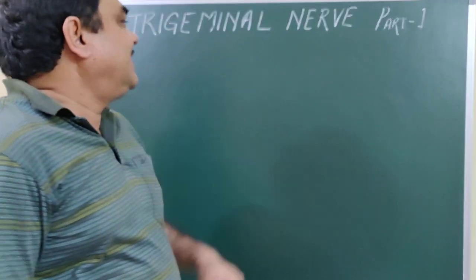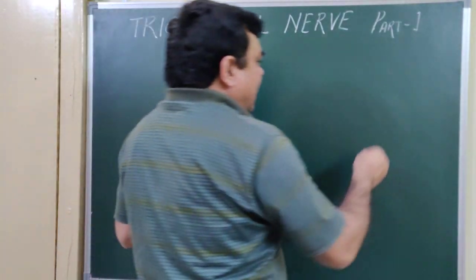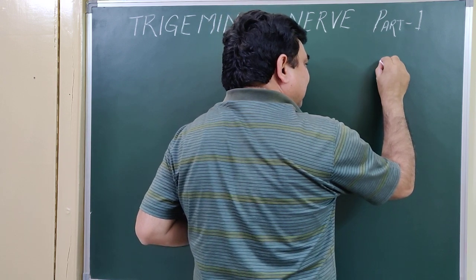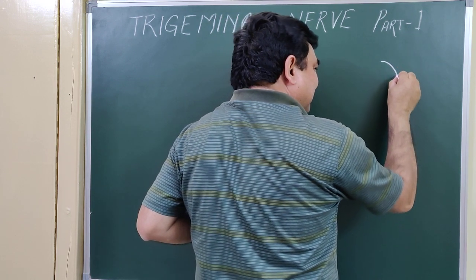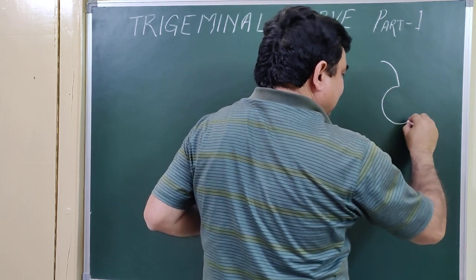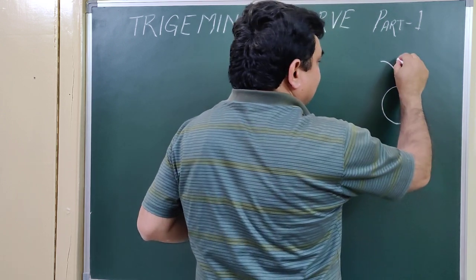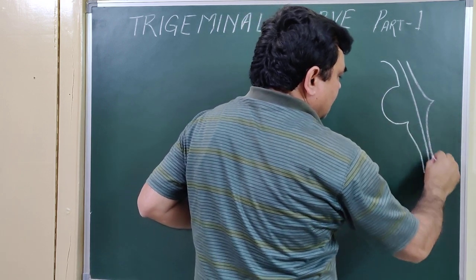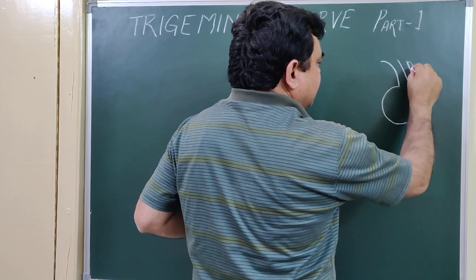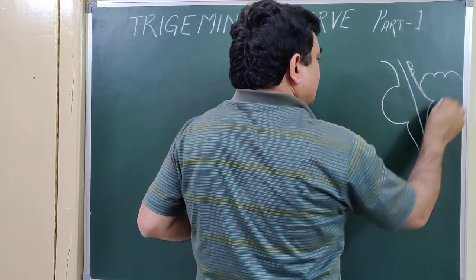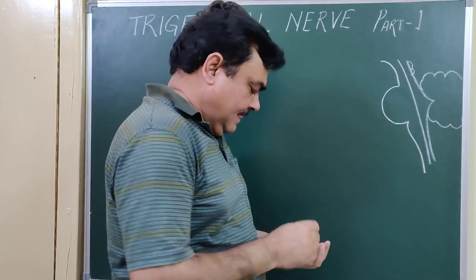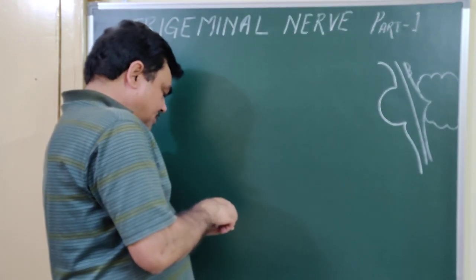Today we will discuss the Trigeminal nerve, Part 1. First of all, here we make a diagram. This is the brainstem. This is the midbrain part and medulla. Here is the position of the pons.